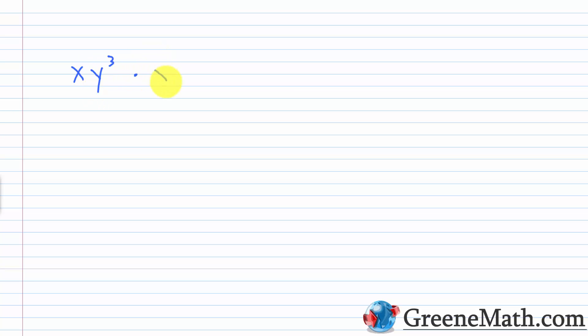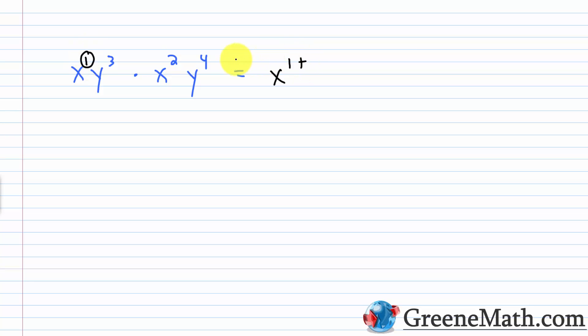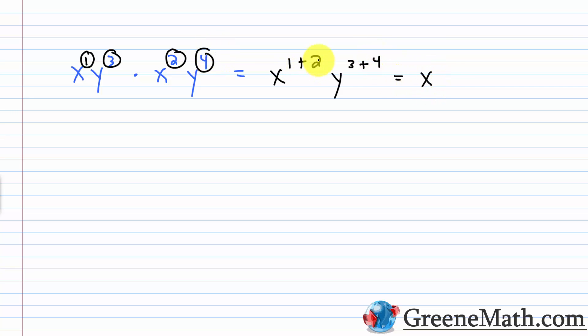This also works with variables. If we have x times y to the third power, and we multiply this by x squared y to the fourth power, we keep the base the same and think about x and y separately. x times x squared: x has an implied exponent of one, so we get x to the power of one plus two. For y, we have y cubed times y to the fourth power, giving y to the power of three plus four. So the result is x cubed times y to the seventh.